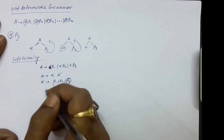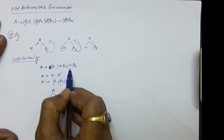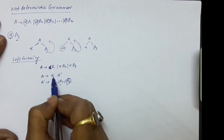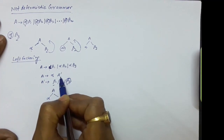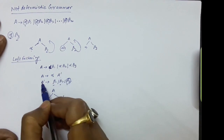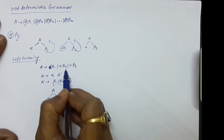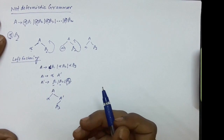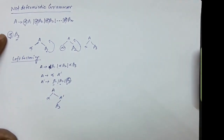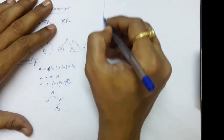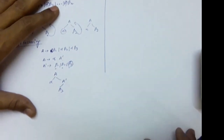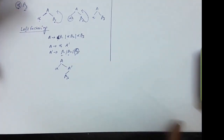We take the common element alpha from the three productions, introduce a new non-terminal A′, and then A′ produces beta 1 or beta 2 or beta 3. This is how we remove the non-determinism of these grammars using left factoring — by postponing the decision of selecting beta 1, beta 2, or beta 3 to the next step.